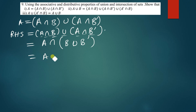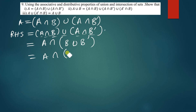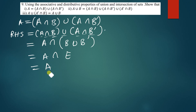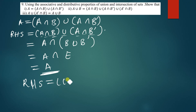If we combine B and B complement, it's like putting what is in B and what is not in B together — we get the universal set. So A intersection (universal set) gives us A, because the common elements between A and the universal set is just A. This proves the right-hand side equals the left-hand side. Hence shown.